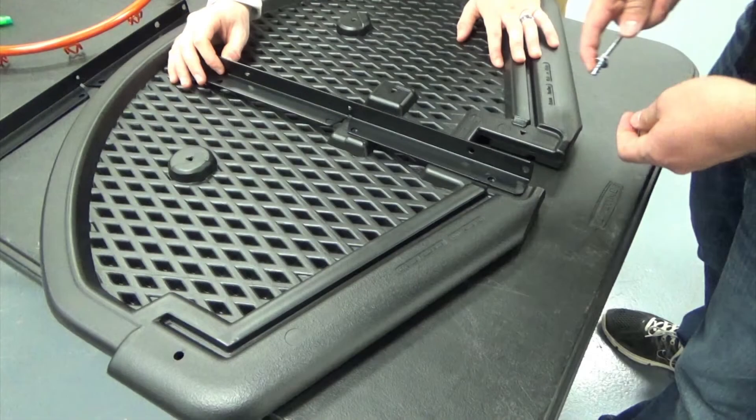In this instructional video, we will be assembling the backboard and rim of a Lifetime Youth Basketball System. Your system may look different than the model shown, but the steps performed will still apply.